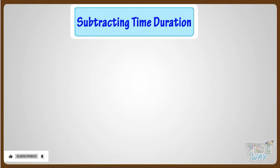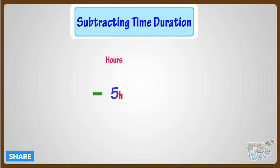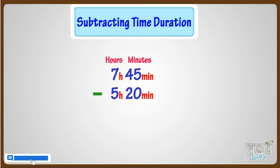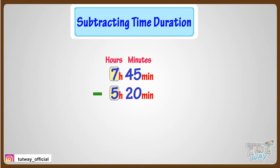Kids, now let's learn how we can subtract time. We have to subtract 5 hours, 20 minutes from 7 hours, 45 minutes. While subtracting time, the same rule is to be followed: subtract hours from hours, and minutes from minutes.